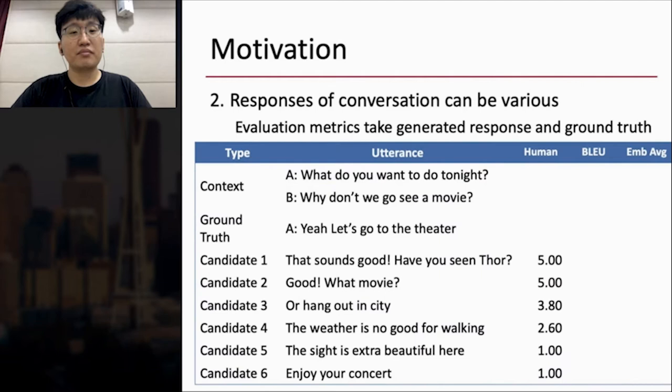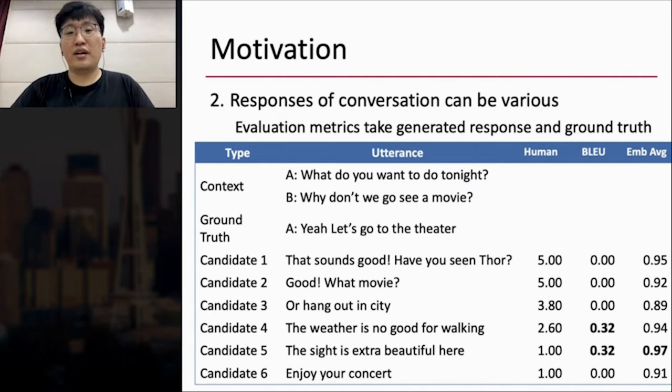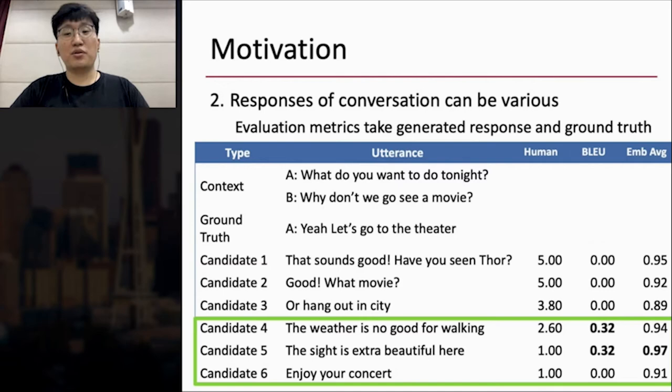So this table shows context, ground truth, and six candidates that are described in the previous slide. And I asked the appropriateness of candidates to people. The range of the score is one to five, which five means the most appropriate response for the context. And I sorted the candidates in descending order. And here I used BLEU and the embedding average to compute the similarity between the ground truth and all candidates. But BLEU gives zero scores to appropriate candidates since there are no intersected words between the candidate and the ground truth. And they give high scores to non-appropriate responses.